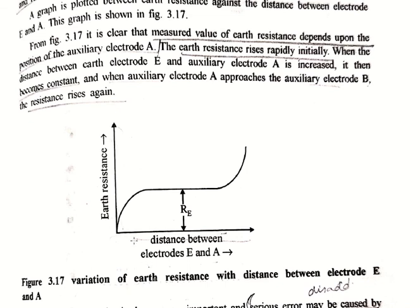The variation of earth resistance with the distance between E and B is shown here. The placing of electrode A is therefore a very important factor, and serious errors may be caused by incorrect placement of auxiliary electrode A. The correct value of earth resistance RE is obtained when auxiliary electrode A is at such a distance that the resistance lies on the flat part of the curve. We can measure the exact earth resistance when auxiliary electrode A is placed at the position where earth resistance is constant. The spacing between earth electrode E and auxiliary electrodes A and B should be a large distance to get a proper result. This distance may be a few hundred meters in cases where earth resistance is very low.